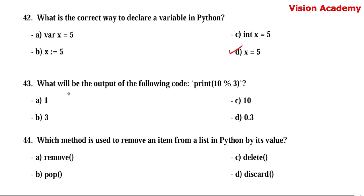Question number 43. What will be the output of the following code: print(10 % 3)? Option A: 1. Option B: 3. Option C: 10. Option D: 0.3. When we use the modulo operator (%), it returns the remainder after division. 3 × 3 = 9, so the remainder of 10 divided by 3 is 1. Modular division always returns the remainder. Here, the answer is 1 — option A is the right answer.